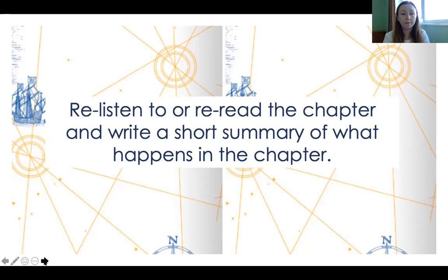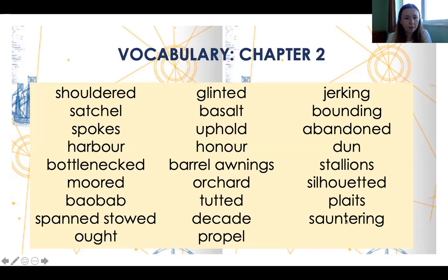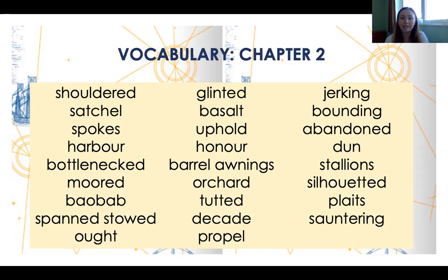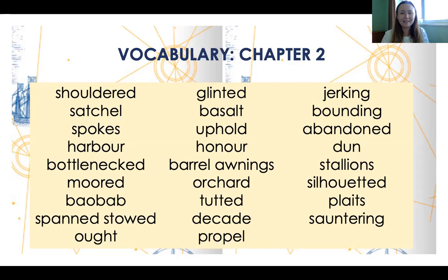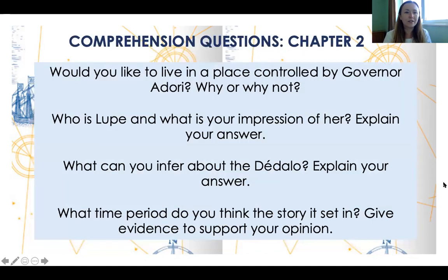Chapter two vocabulary includes: shouldered, satchel, spokes, harbor, bottlenecks, moored, baobab, spanned, stowed, ought, glinted, basalt, uphold, honor, barrel, awnings, orchard, tutted, decade, propel, jerking, bounded, abandoned, stallions, silhouetted, plaits, and sauntering. I'm reading these to you because sometimes when written down you may not have seen them before and might read them phonetically differently from how they're actually pronounced.